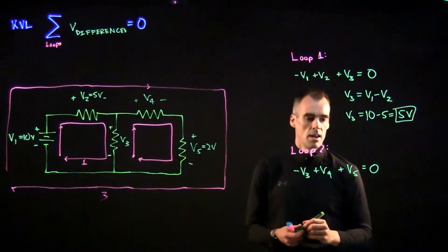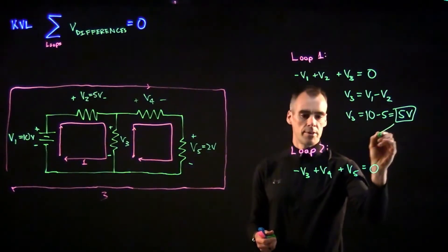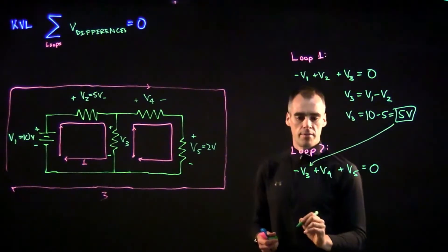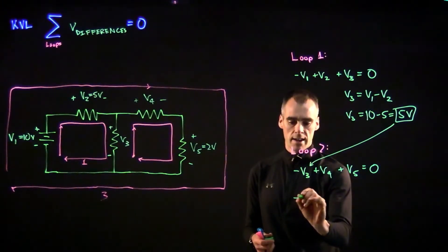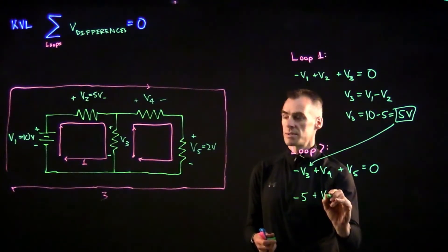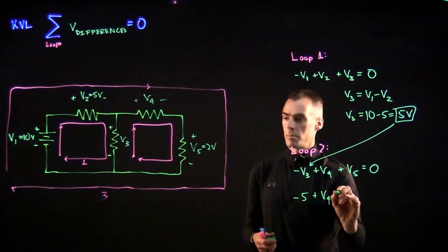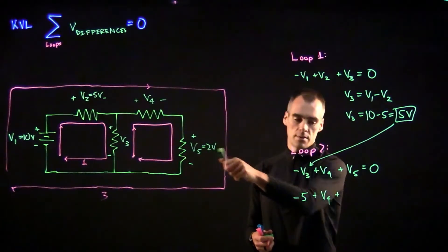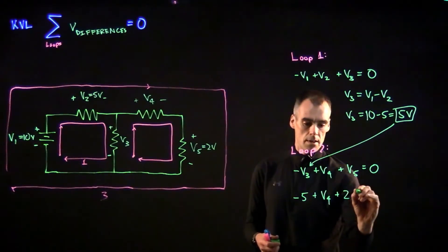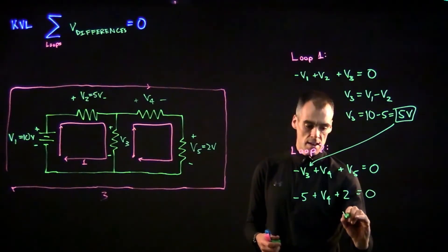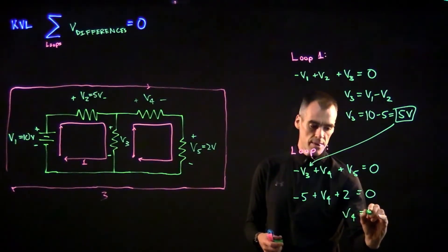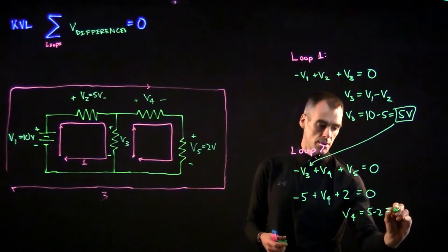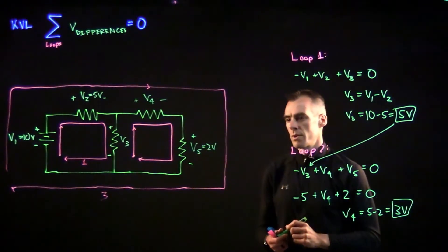So that was easy, and we can go ahead and take that 5 volts and plug it in for our V3 down here. So we've got negative 5 plus V4, which we're trying to solve for, plus V5, which is 2 volts, equals 0. So we can say that V4 is equal to 5 minus 2 equals 3 volts, and we're done.